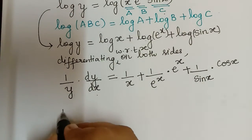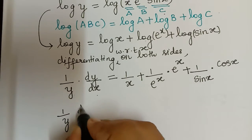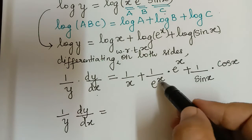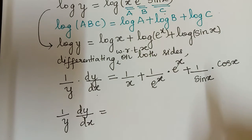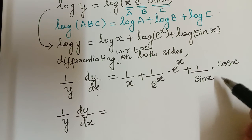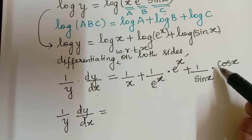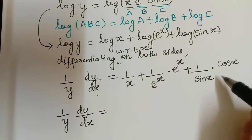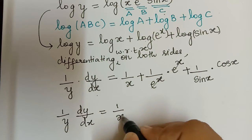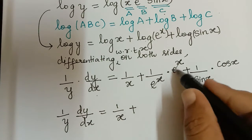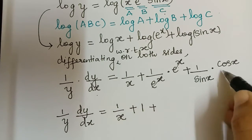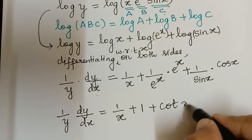So 1 by y multiplied with dy by dx equals the simplified right hand side. Now e power x and e power x cancel, giving 1. And cos x divided by sin x is cot x by the trigonometric formula. So this becomes 1 by x plus 1 plus cot x.